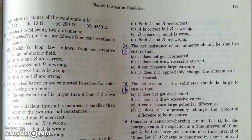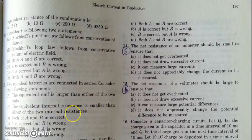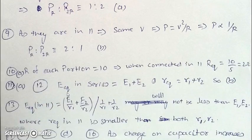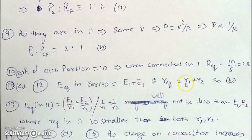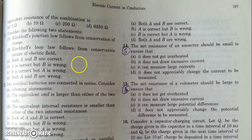In the next question, two non-ideal batteries are connected in series. We need to verify whether the equivalent EMF is larger than either EMF and whether the equivalent internal resistance is smaller than either internal resistance. Since they are in series, E_equivalent = E1 + E2 and R_equivalent = R1 + R2. So E_equivalent is greater than both E1 and E2, and the equivalent resistance is also larger than both R1 and R2. Therefore, statement 1 is correct and statement 2 is incorrect.